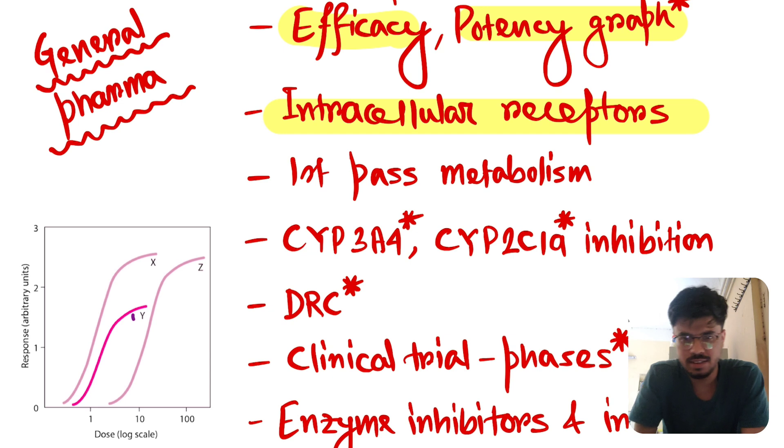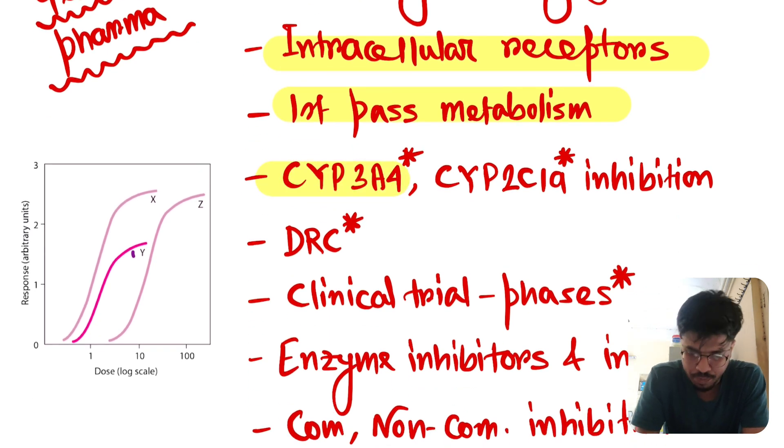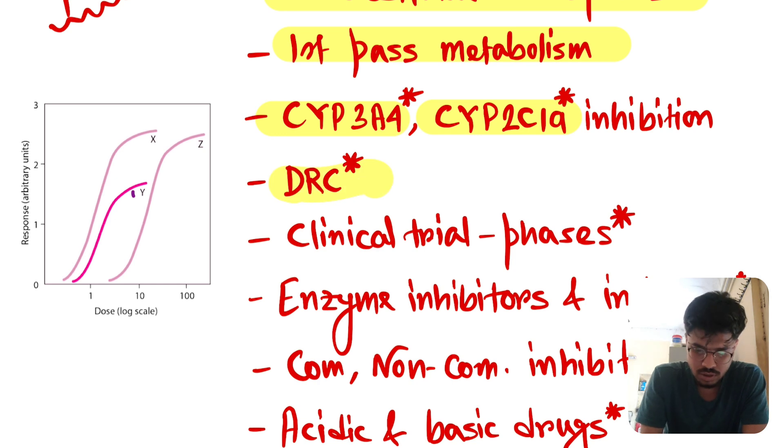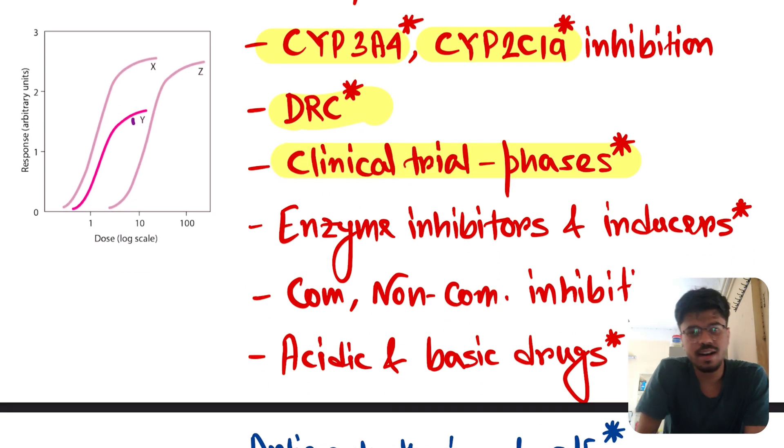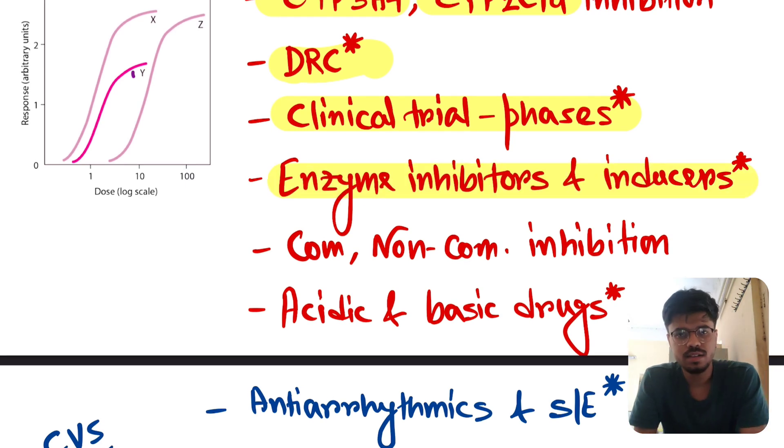Now, intracellular receptors, cytoplasmic receptor, intranuclear receptor, these are all important. First pass metabolism. CYP3A4, CYP2C19. There are so many CYPs, but at least you should read CYP3A4 and CYP2C19. Now, DRC graph, very important. Clinical trial, all the phases, very very important. In which phase there is dose ranging, in which phase there is efficacy testing. These are all important. Enzyme inhibitors and inducers. There are a huge list, but at least you have to read the important ones.